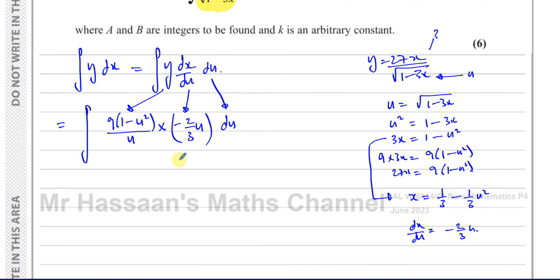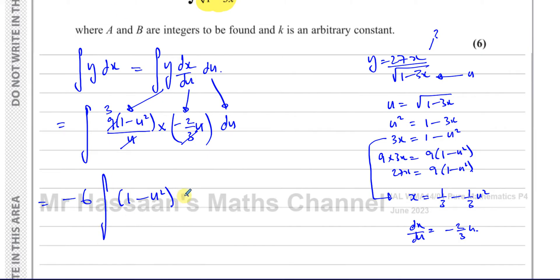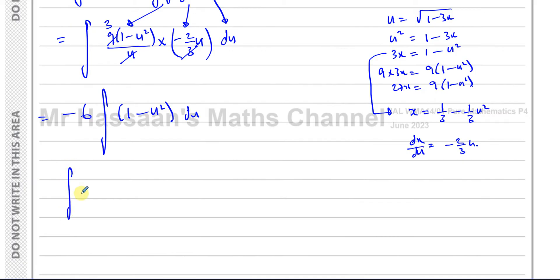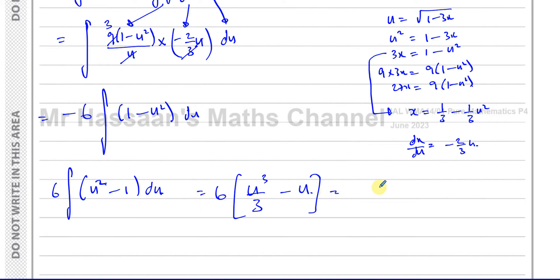There are no limits to change here since this is an indefinite integral. Now everything is in terms of u. We can cancel: this u cancels with that u, and the 3 cancels with the 9 leaving 3. So we get 3 times minus (2/3) equals minus 6, multiplied by the integral of (1 minus u squared) du. Bringing the minus sign in gives the integral of (u squared minus 1) du.